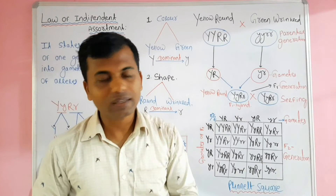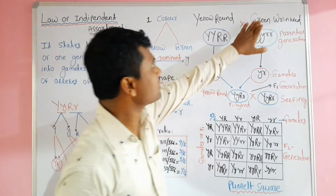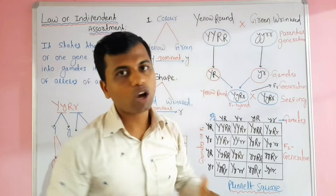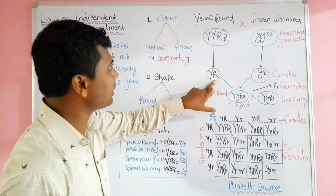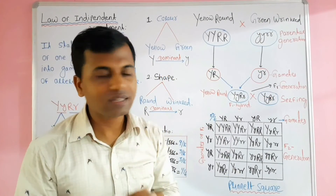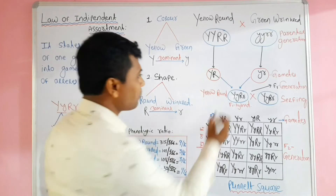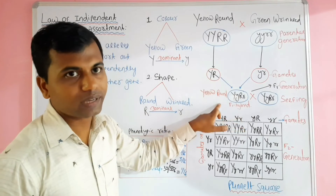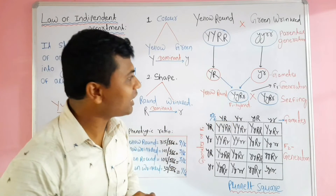Mendel crossed two homozygous pea plants: one is homozygous for yellow and round, and the other is homozygous for green and wrinkled, having genotype small y small y small r small r. This yellow round and green wrinkled plant forms the parental generation. During gamete formation, the yellow round plant forms gametes carrying capital Y capital R, and the green wrinkled plant forms gametes carrying small y small r. These gametes, by the process of fertilization, combine to form the F1 hybrid. In this F1 hybrid, according to the phenomenon of dominance and recessiveness, capital Y expresses producing yellowness and capital R expresses producing roundness. So the phenotype of the F1 hybrid is yellow and round.